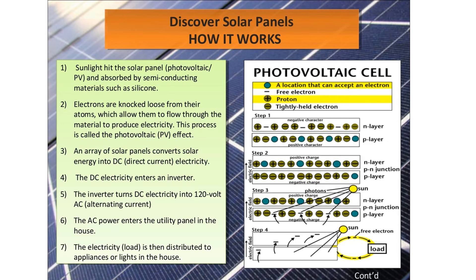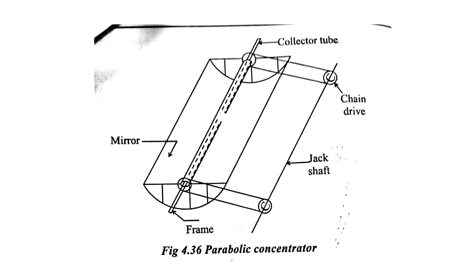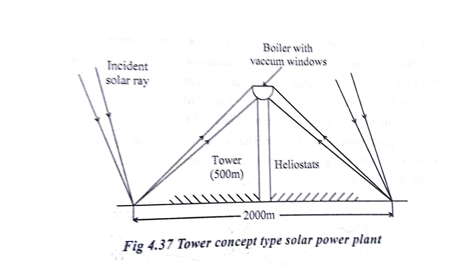This shows a more photographic explanation of the n-layer and p-layer and how the holes exist and how electricity is converted. There are different types of collectors to collect solar energy: the flat plate collector, a parabolic structure, and the tower concept of a solar power plant.